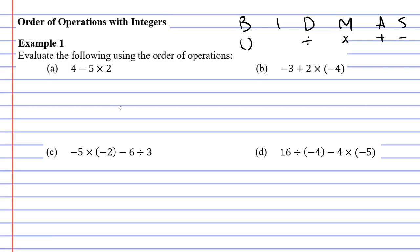Starting on question A, you'll notice we've got subtraction and multiplication. So we're always taught to do our multiplication first, working out 5 times 2 which is 10 and we need to carry down anything we didn't use. We didn't use the 4 and we didn't use the minus sign so we carry that down below and then we work it out 4 minus 10 comes to negative 6.